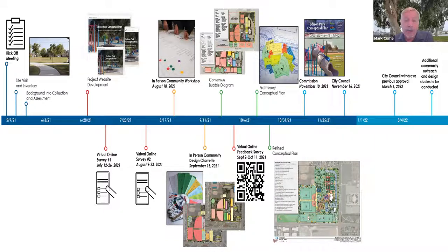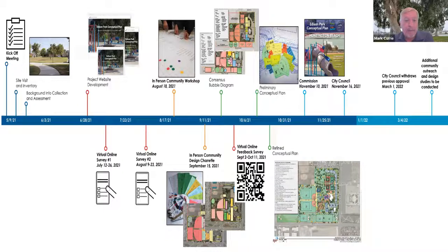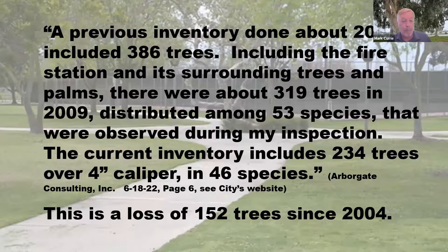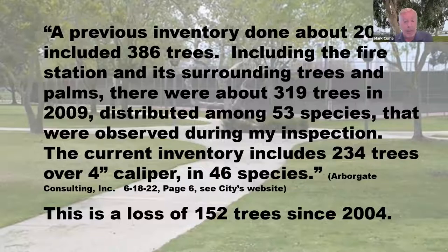RJM posted signs in the community center, but many users of the park do not go into the community center. The community center was also closed for renovations during part of this time. By mid-October, RJM was ready to present their design to the city. On November 8, 2021, the Community and Library Services Commission voted 6-0 to send the original Edison Park Conceptual Plan to the City Council for full approval over the objections of the local community. The local residents and neighbors were not happy with the lack of communications from the city or RJM about the major changes proposed.